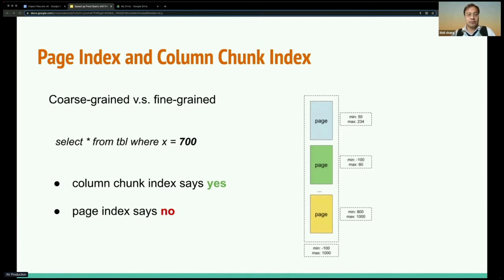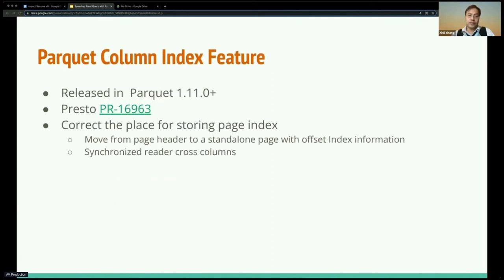Another example where the filter equals 700. Now the column chunk index says yes and the page index says no, because all three pages don't have a range to cover the index. In this case, you can skip all the pages reading. So it's a huge saving.